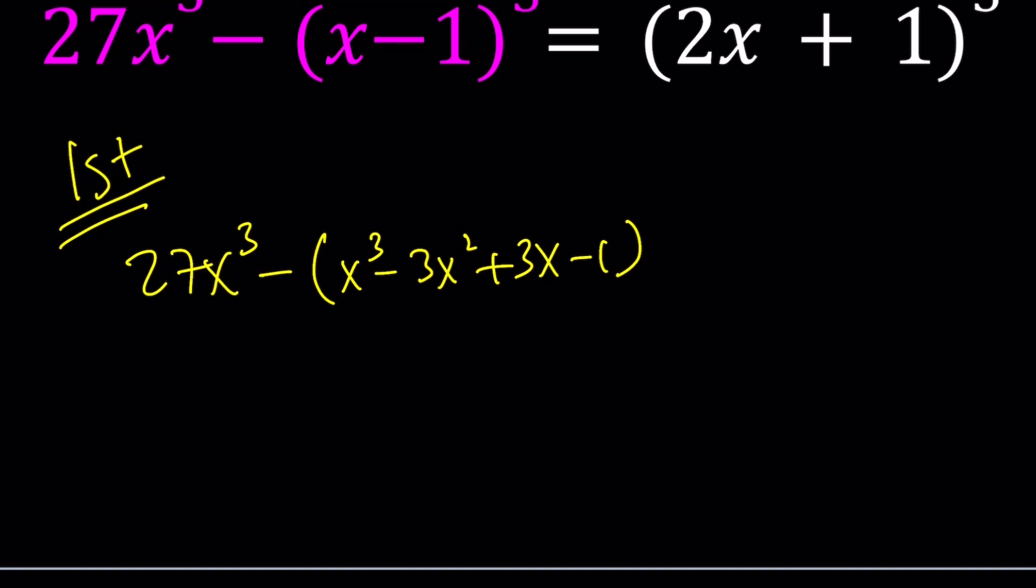And then let's simplify this a little bit. If you subtract, you're going to get 26x cubed plus 3x squared minus 3x plus 1.